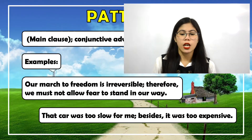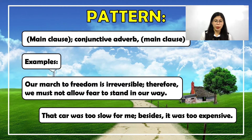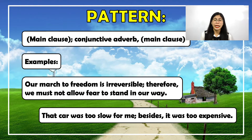Here's the pattern you can follow when using conjunctive adverbs. Note the use of the semicolon and the comma to separate the words in sentences. The pattern is: main clause or independent clause, followed by a semicolon, then the conjunctive adverb, followed by a comma, and then another main clause or independent clause.